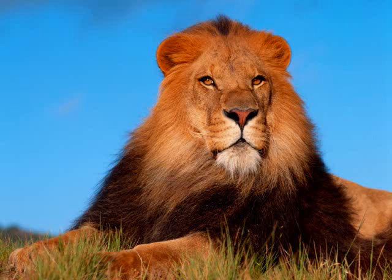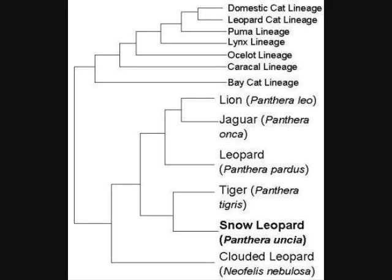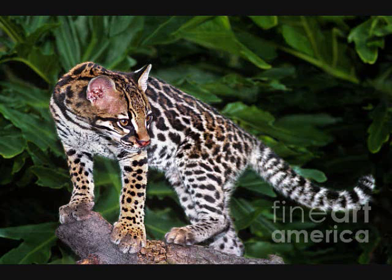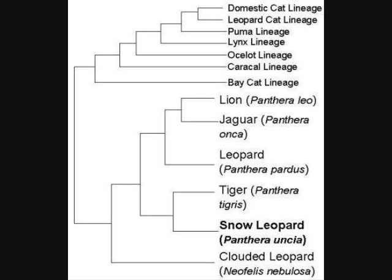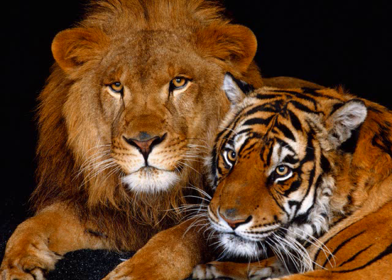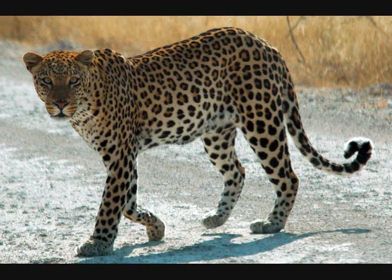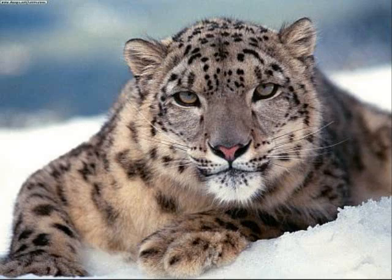All extant, or non-extinct, cats of today are classified within one large group known as Felidae. This group can be divided into two sub-families. Felinae — not to be confused with Felidae with a D — which consists of cheetahs, ocelots, servals, caracals, even domestic cats and other smaller cats. The second sub-family, Pantherinae, consists of most of the larger cats, or big cats, such as tigers, lions, leopards, jaguars, snow leopards, and all sorts of other crazy shit that'll eat your ass.